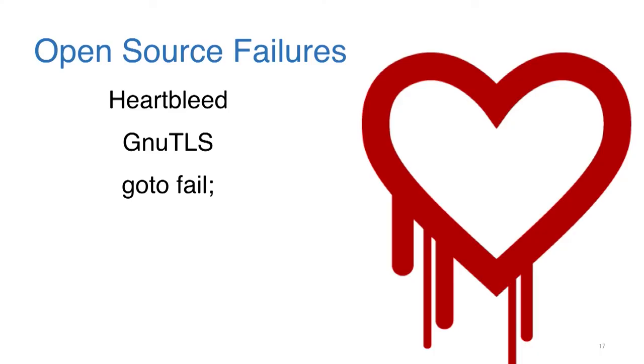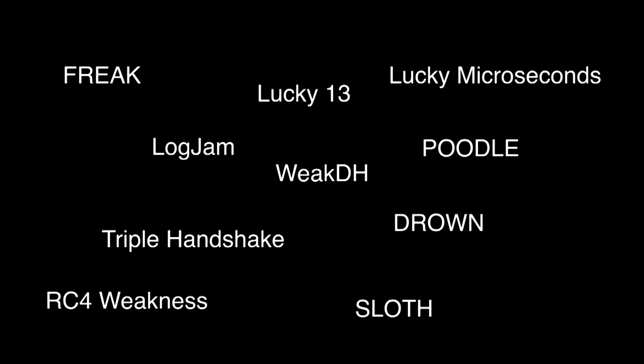The open source software that helped liberate strong encryption for the world was also found around this time to have several flaws. But the worst part was that the TLS protocol for HTTPS, as implemented, was flawed — and flawed in various different ways.